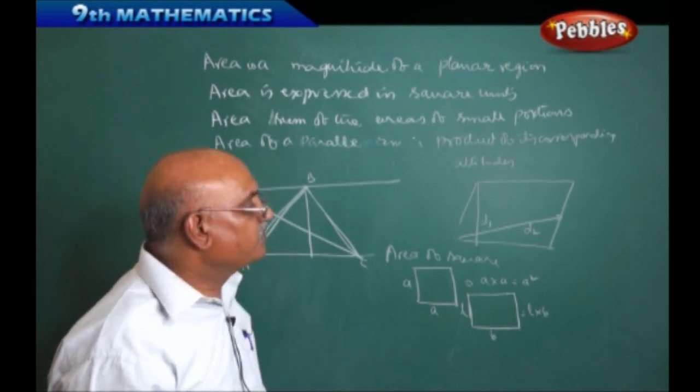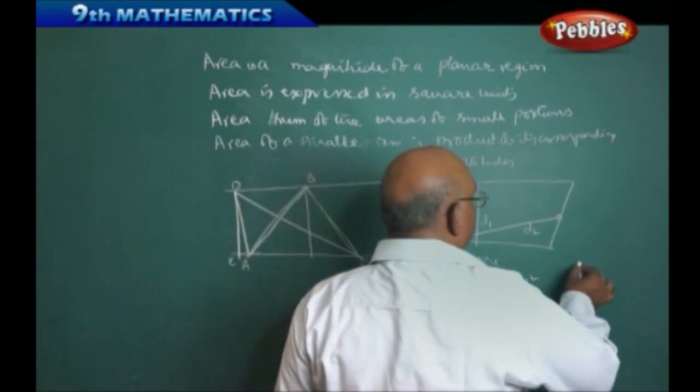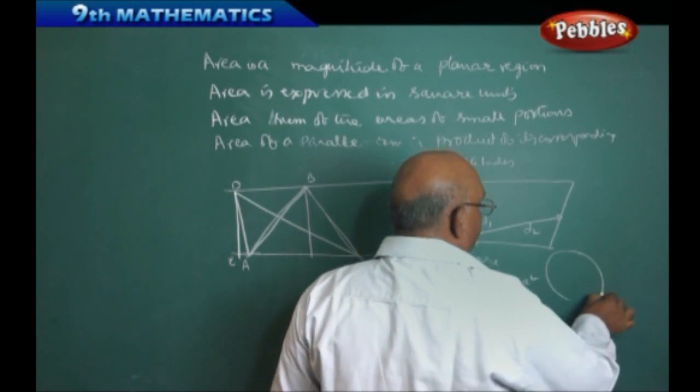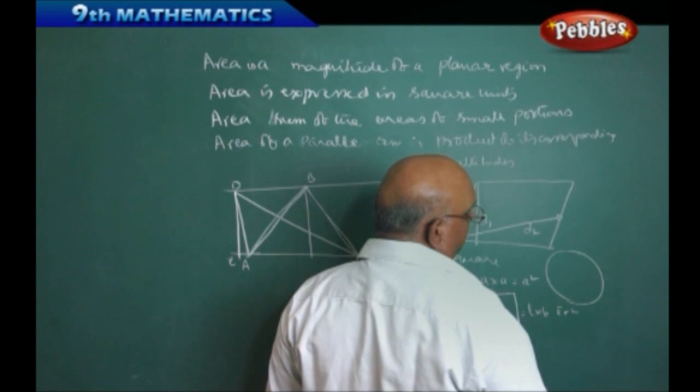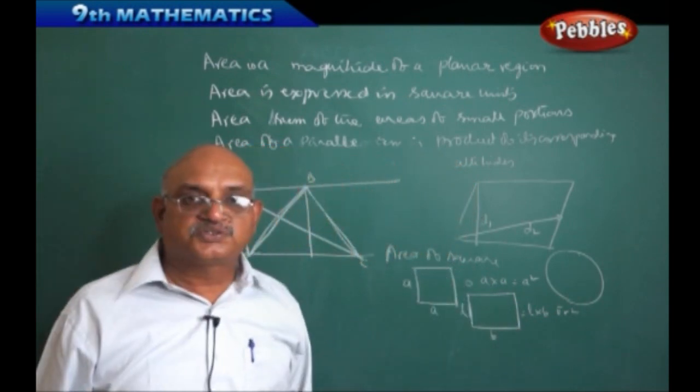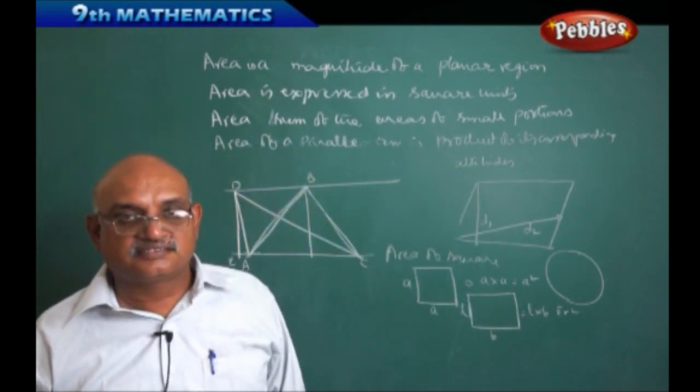Like that, we want to find out the area of a circle. Naturally we are going to see that pi R square is the area of the circle. Like that, we can find out so many other different areas.